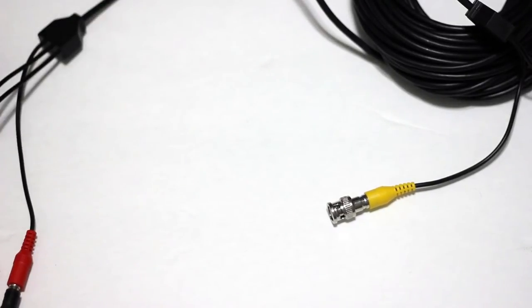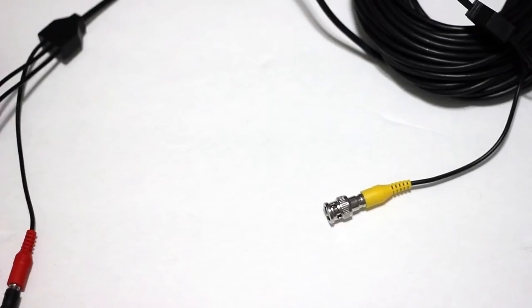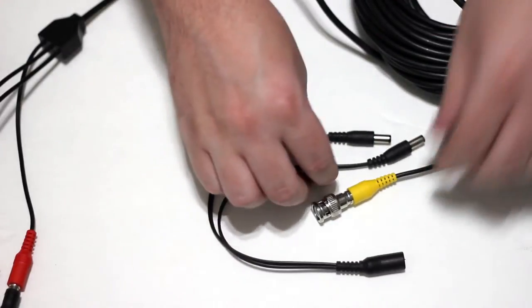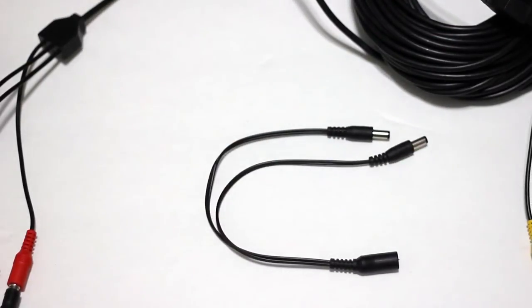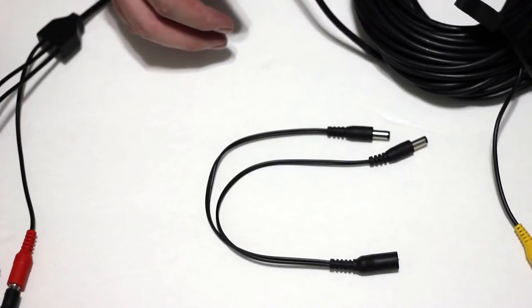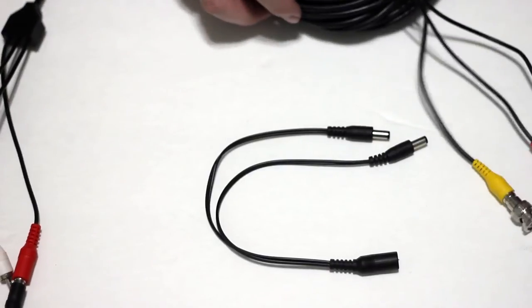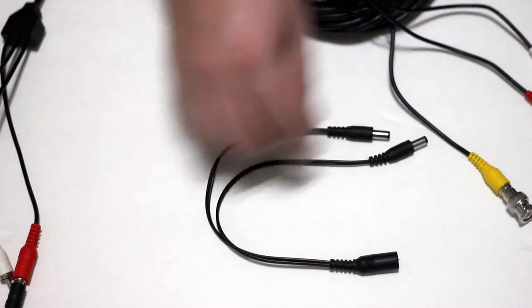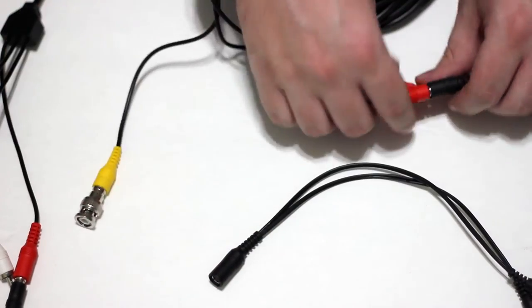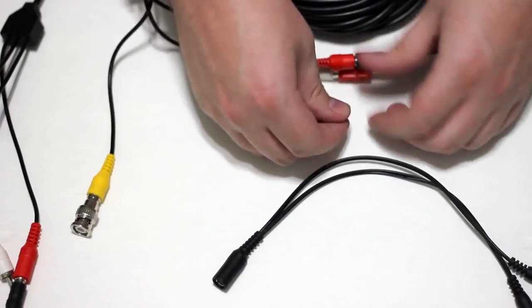The one trick and the one additional thing that you would need to make this all work is this little power splitter. Obviously this cable only has one power connector and we just use that to connect the microphone. The camera needs power too.